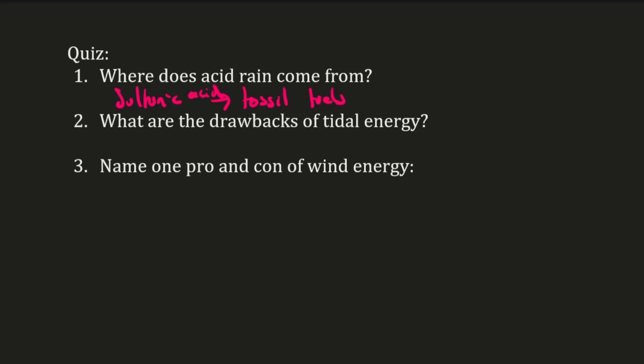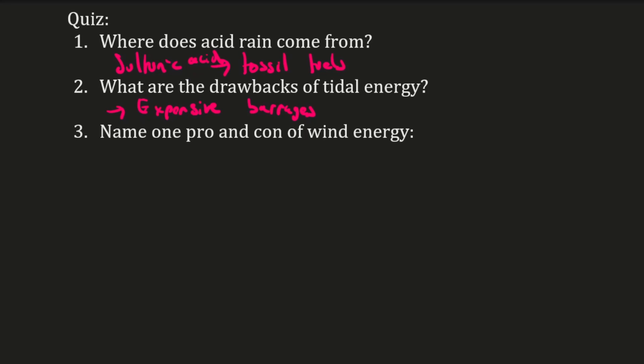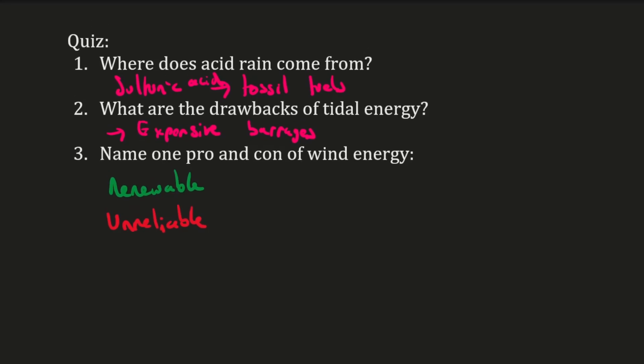Okay, the next part, question two, what are the drawbacks of tidal energy? Well, the key drawback for tidal energy is you need expensive barrages. And so it costs quite a lot of money to build a tidal energy infrastructure. The next thing is name one pro and con of wind energy. So one pro, you can say it's a renewable energy resource. You can also say that it doesn't produce any harmful gases or contribute to global warming. But one con, you could say it can be unreliable. Obviously, you are relying on the wind to be blowing. And if you have a not very windy day, you're not going to generate very much electricity. Okay, so hopefully, that will make sense. And I'll see you in the next one.